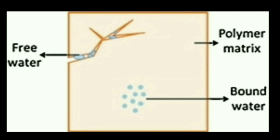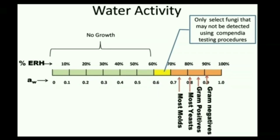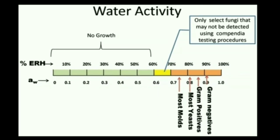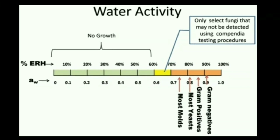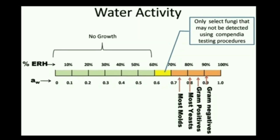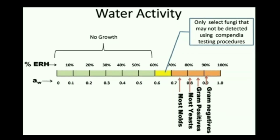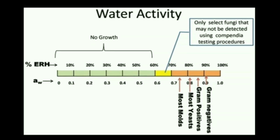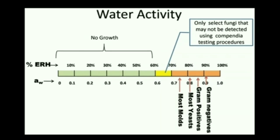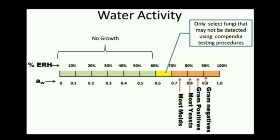The higher the water activity, the faster the microbial growth. The water activity scale extends from zero to one, where pure water has a water activity of one. Based on regulations, if the water activity of a food is 0.85 or below, it is generally considered non-hazardous, because most pathogenic bacteria including Clostridium botulinum grow well in a medium with water activity approaching one.